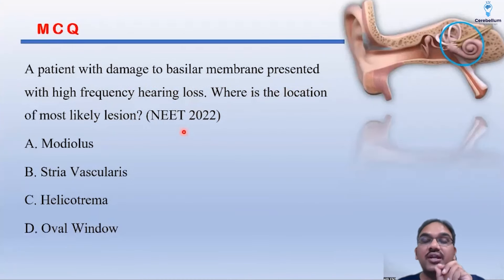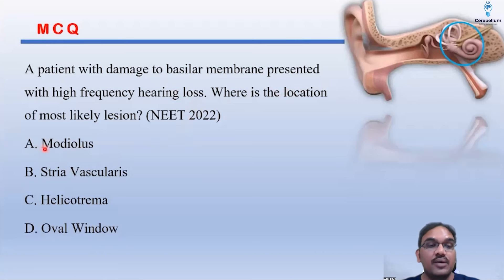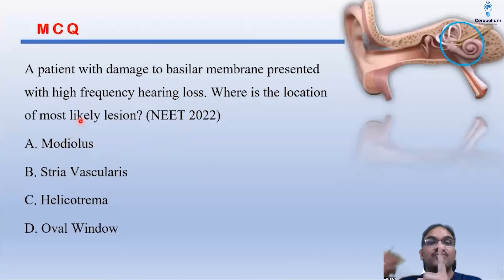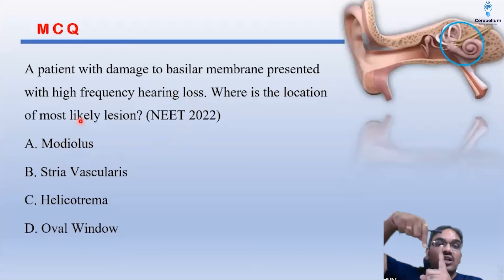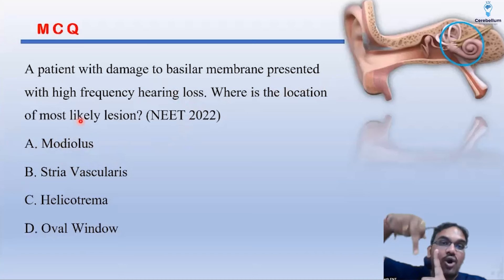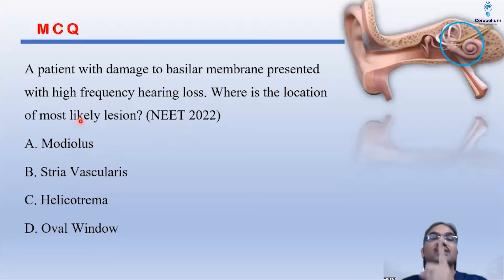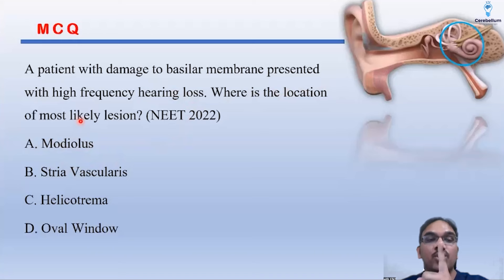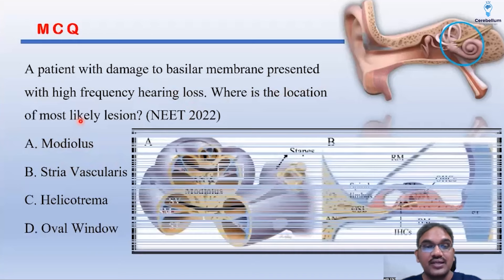What structure is present near the basal coil? If you consider the modiolus — the modiolus is the central axis of the cochlea, around which the cochlea rotates. The cochlea coils around this central bony axis, which is called the modiolus.